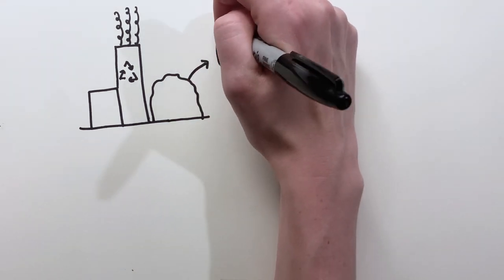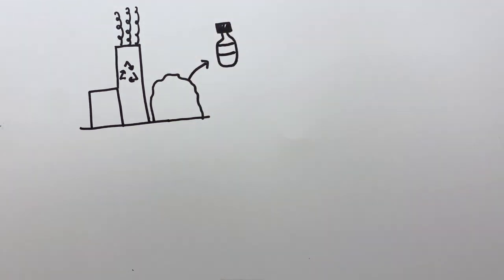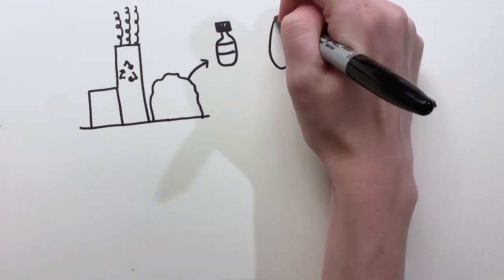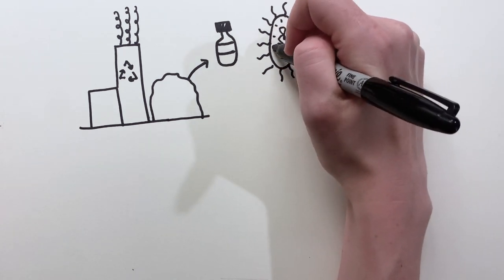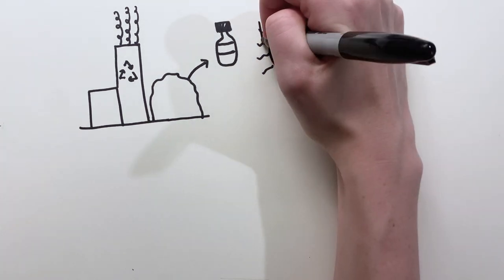They looked everywhere, from the dirt outside the plant to the wastewater system. They finally found the Holy Grail, a species of bacteria which they later named Idionella saccaensis. This bacteria had a very unusual diet: plastic bottles.